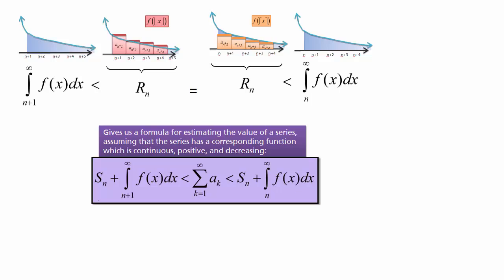Putting this all together, we can get a formula that says if we sum the first n terms of our series and then integrate from n plus 1 to infinity of f of x dx, that's a number that must be smaller than our final sum. And if we take the first n terms plus the integral from n to infinity of f of x, that's a number that must be bigger than our total sum. Since these integrals get smaller and smaller as n gets bigger — because the sequence is decreasing to zero, and thus f of x is also decreasing to zero — we can approximate the value of a series as closely as we want by picking a big enough value of n.